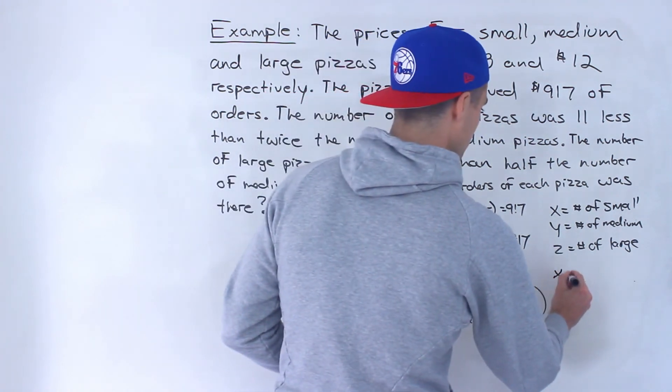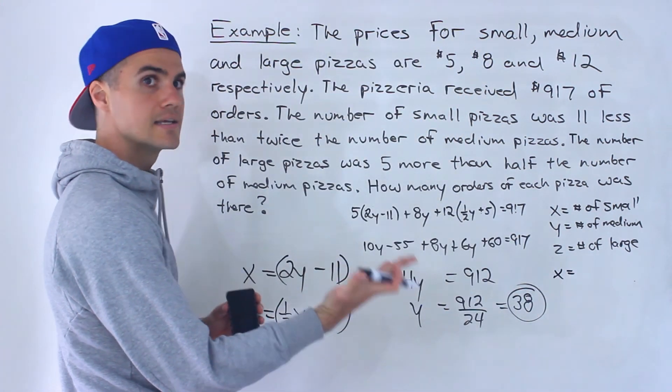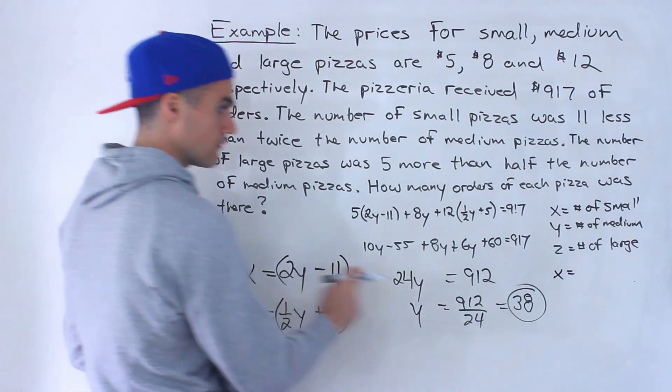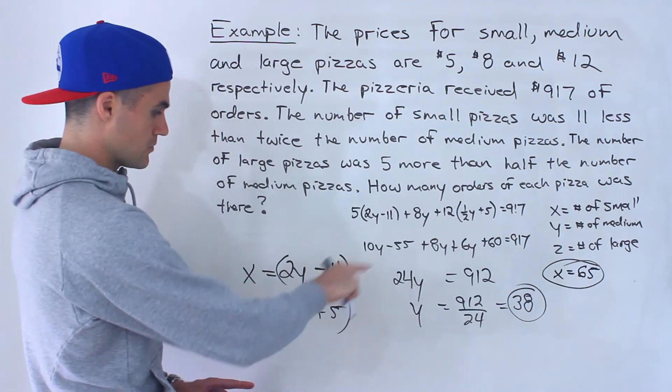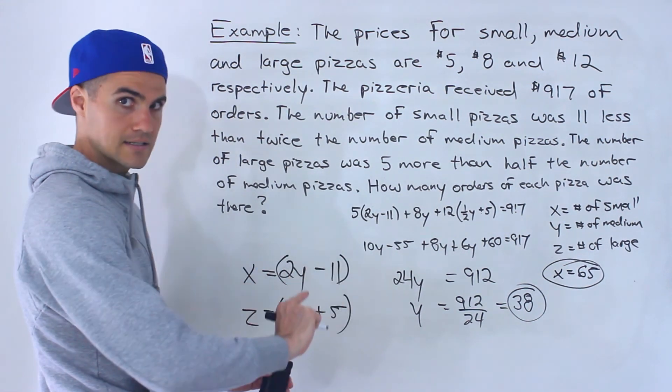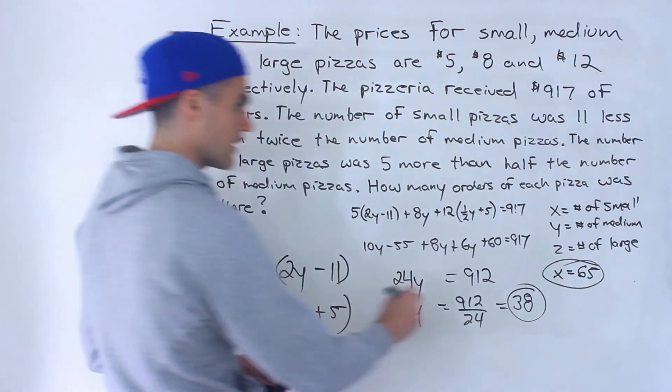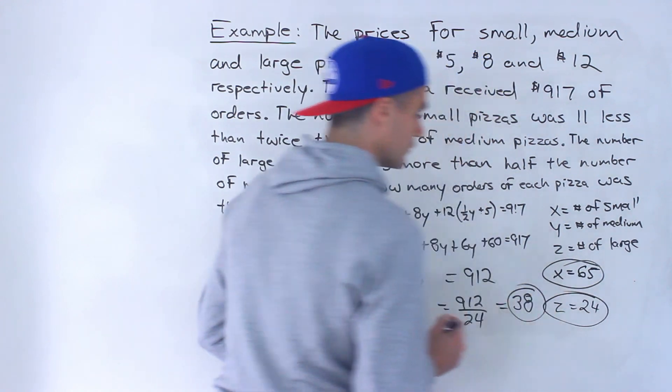So x would end up being 2 times 38, which is 76, minus 11 would be 65. So that's the number of small pizzas. And then if we plug in 38 here, one half times 38 is 19. 19 plus 5 gives us 24. So that's the number of large pizzas.